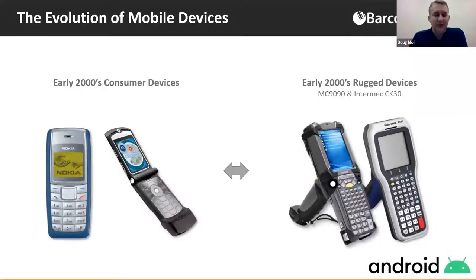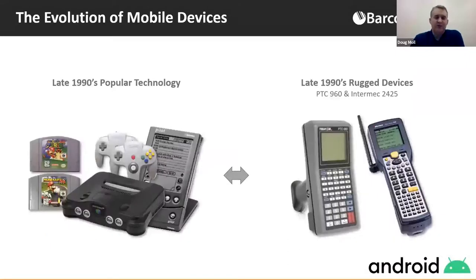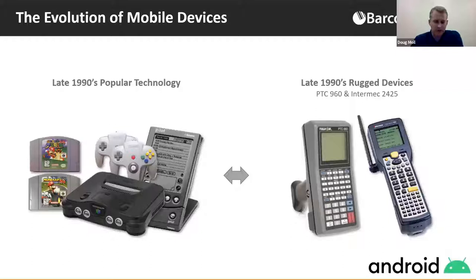Around that era, the Nintendo 64 had just been released, and the first Palm Pilot had just hit the market — it had 128 kilobytes of RAM, upgradable to one megabyte if you were willing to replace some internal hardware. If you have a recently released phone right now, you probably have the memory of about 64,000 of those early Palm Pilots.